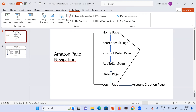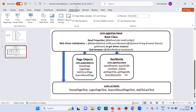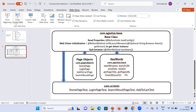Using this, I have tried to write some basic architecture for creating the framework. In com.agastia.base, which is my first base package, I have written a base class where for the entire test suite I have defined one configuration property file in which I have defined which browser I'm going to use, which URL I'm taking, and the username and password for the registered user.